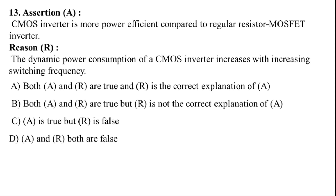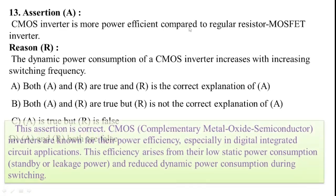Question 13: Assertion and Reason related to CMOS. Assertion: CMOS inverter is more power efficient compared to regular MOSFET inverter. Reason: Dynamic power consumption of CMOS inverter increases with increase in switching frequency. Both statements are correct, but R is not a correct explanation of A. Option B is correct.